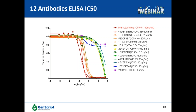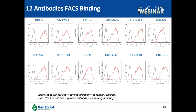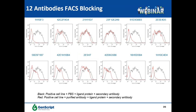The 12 antibodies were evaluated for ligand blocking activity, and we obtained several antibody leads comparable to the marketed drug. Some antibodies showed very low ligand blocking activity, such as 12H11D7 and 23F12E2A9, which probably should not be selected as leads for further downstream development. Additionally, all 12 antibodies showed decent binding to the membrane-bound target when evaluated by FACS on cell lines expressing the target.